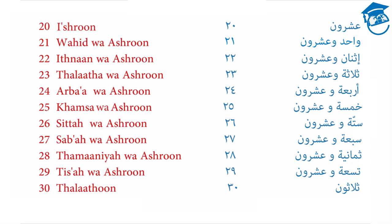If we want to say 21, we actually say 1 and 20. The way we say it is Wahadashurun. 22 is 2 and 20, or Ithnan Wahadashurun. 23 is 3 and 20, or Thalatha Wahadashurun. 24 is 4 and 20, or Arba Wahadashurun. 25 is 5 and 20, or Khamsa Wahadashurun. 26 is 6 and 20, or Sittah Wahadashurun.